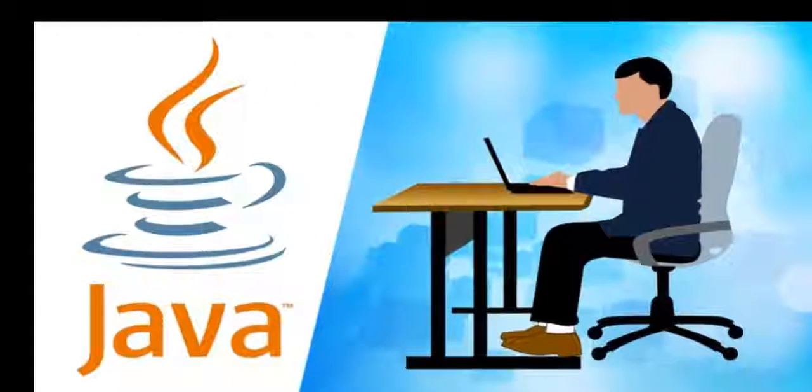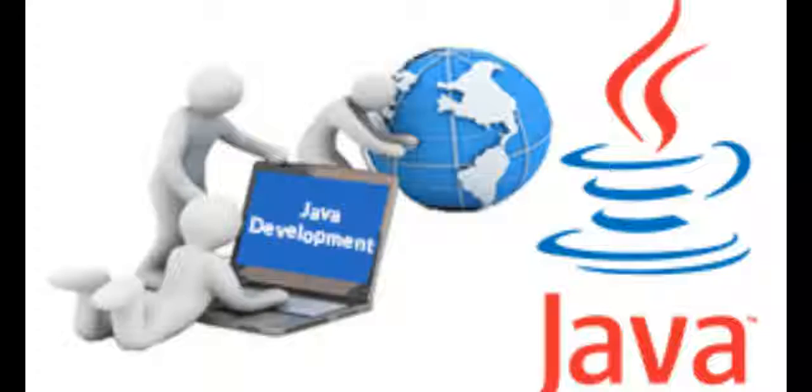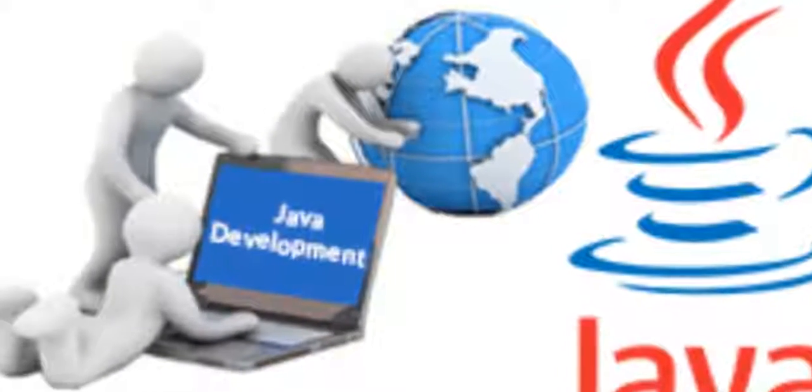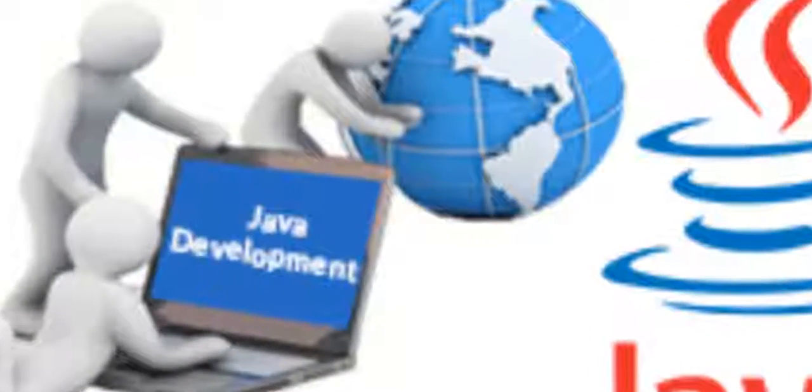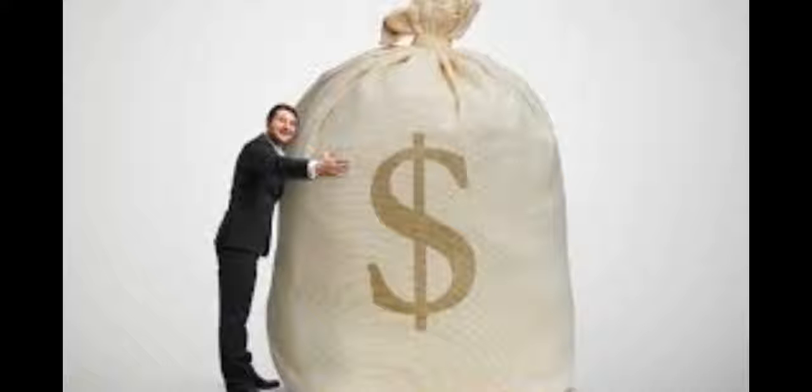The average salary of a Java developer is $83,975. Yes, it pays to be a Java developer and programmers are milking it. There are about 9 million Java developers in the world.